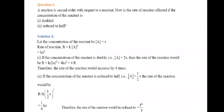Next question: A reaction is second-order with respect to a reactant. How is the rate affected if the concentration of the reactant is doubled? We have rate = K[A]². If the concentration is doubled, A becomes 2A, so rate = K(2A)² = 4KA², meaning the rate increases 4 times.